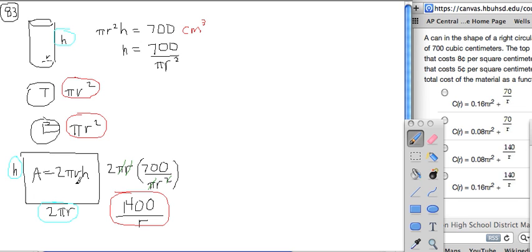When you multiply, you get area, but we can't—if we're going to come up with the cost function as a function of the radius, notice we have radius, radius, but then we have a radius and an h, the height, in this formula here.